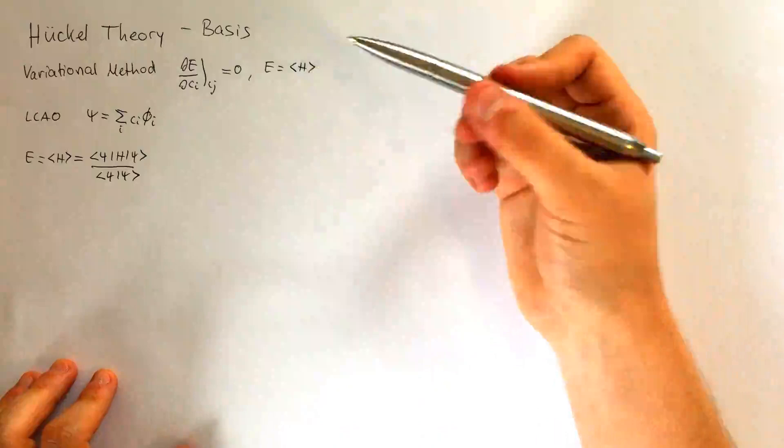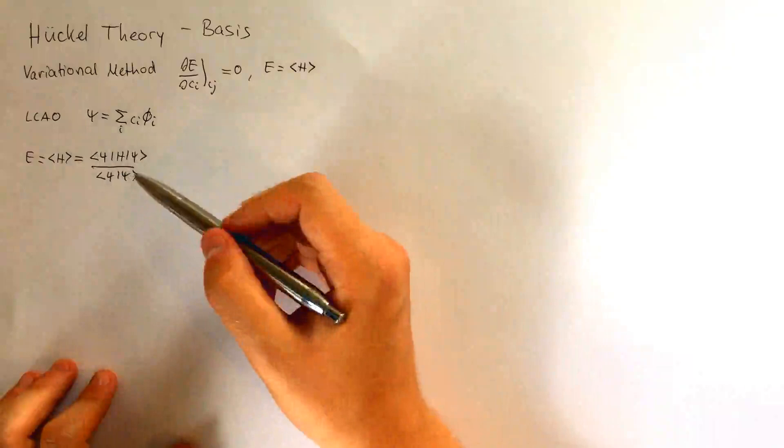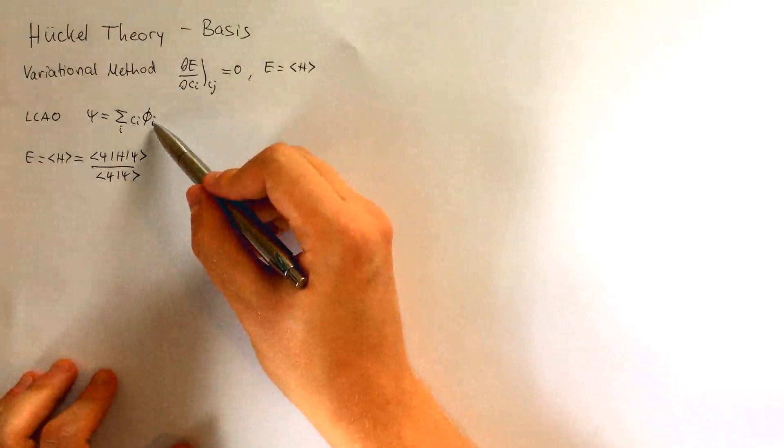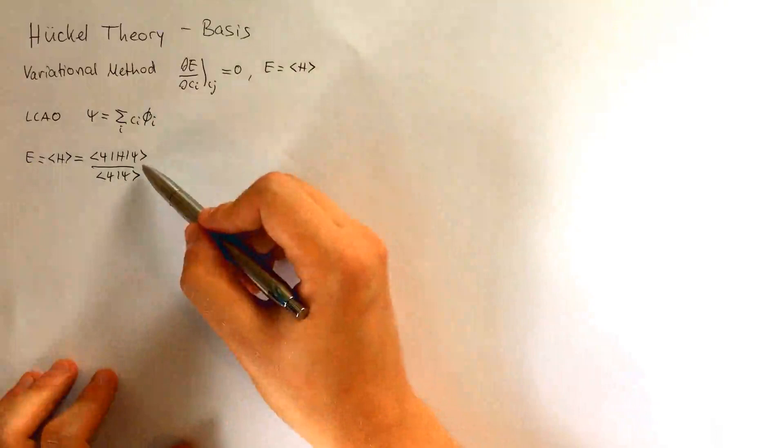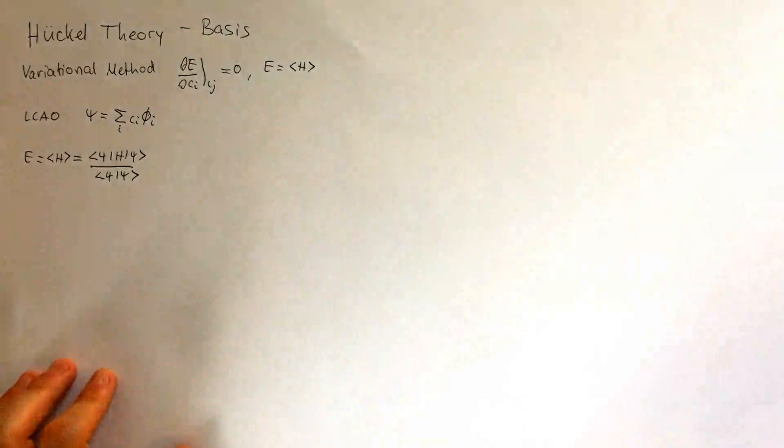We'll need the linear combination of atomic orbital approximation, which says our total wave function is just the sum of weighted atomic orbitals, and our energy is expressed by this, which is just the general form of an expectation value.